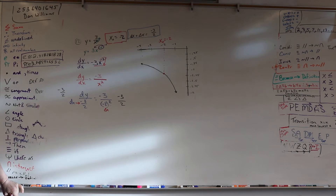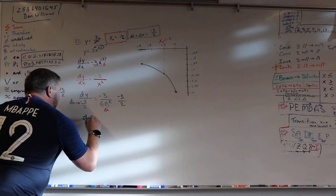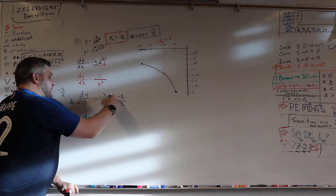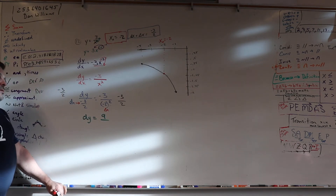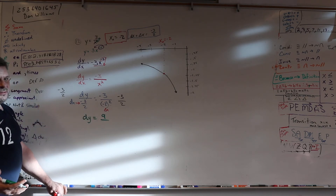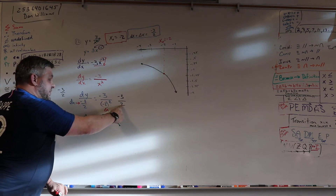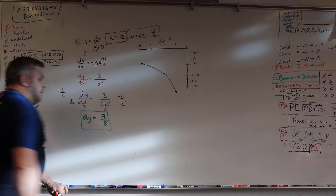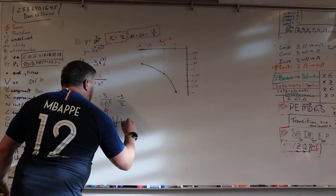We're just gonna multiply both sides — that's it. Negative times a negative is a positive. Squared, right? Yeah. So that's a 4. 4 times 2 is 8. So dy is 9/8. And that's the hardest thing to figure out. So they wrote it as 9/8 or 1.125. You could also write this as 1.125.